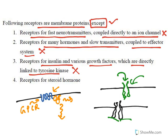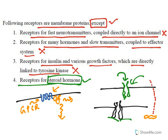The leftover option is receptors for steroidal hormones. Because of their steroidal nature, steroid hormones can easily pass through the membrane, get inside the cell, and act on cytoplasmic receptors. Some steroid hormones go directly into the nucleus and bind with DNA — for example, glucocorticoids bind to the glucocorticoid response element. These receptors are not present at the membrane. So option 4 — steroidal hormone receptors — is the correct answer.